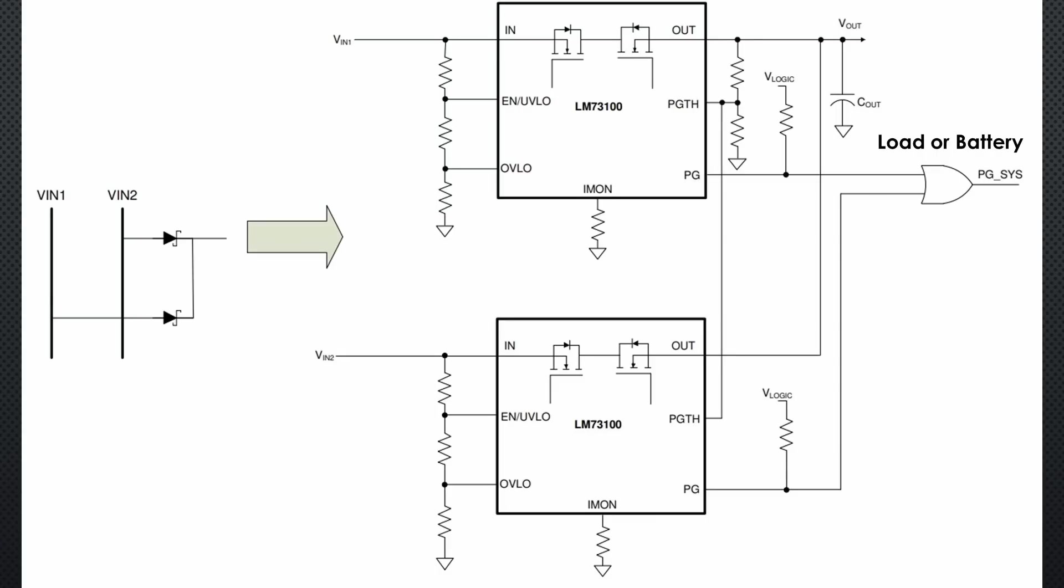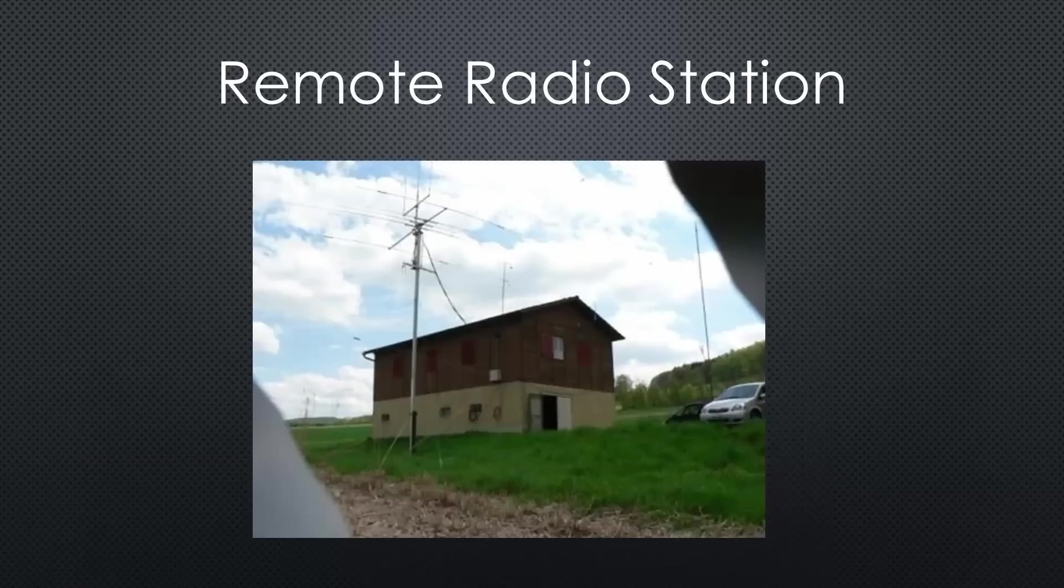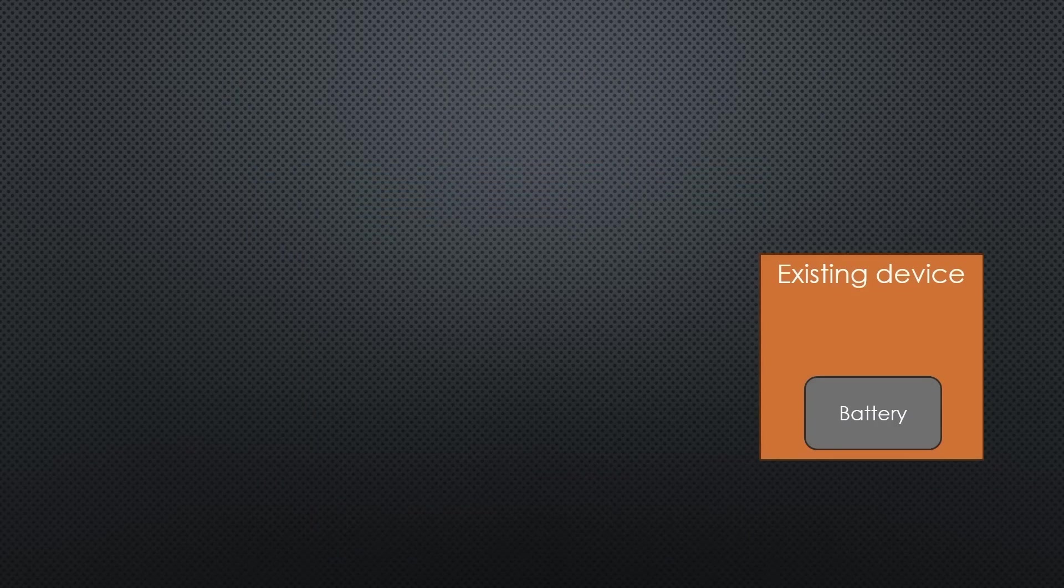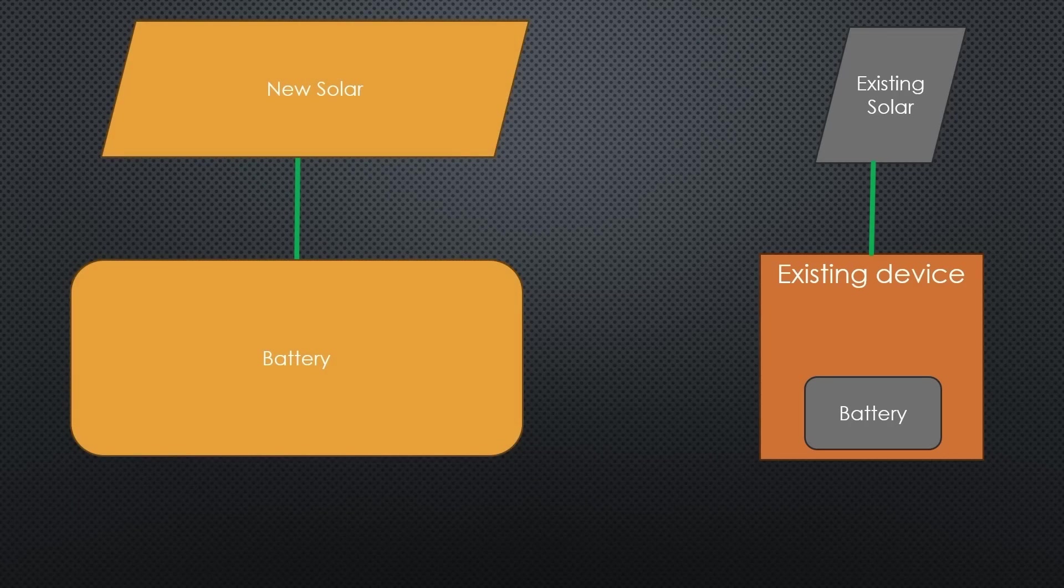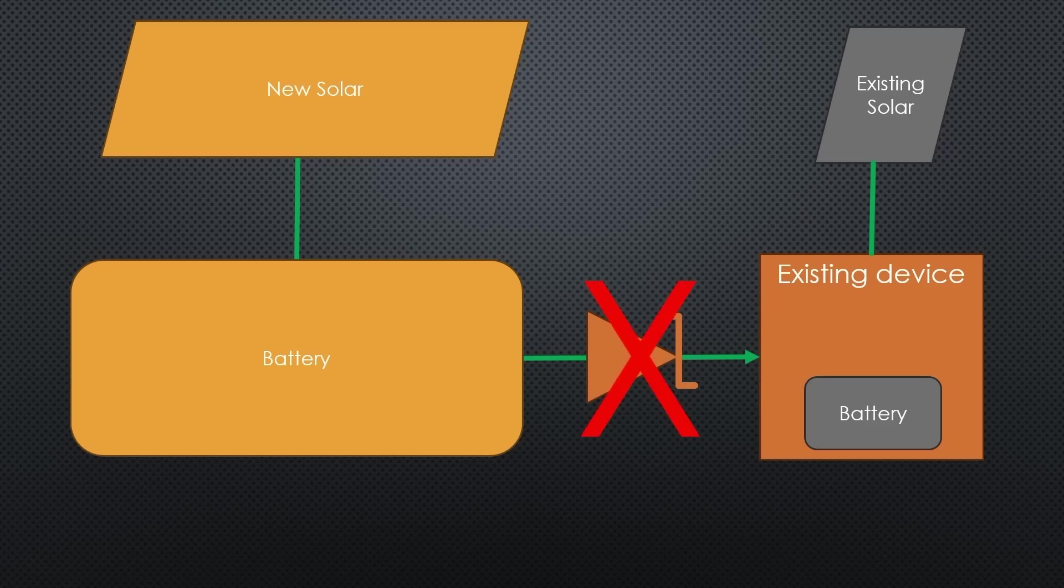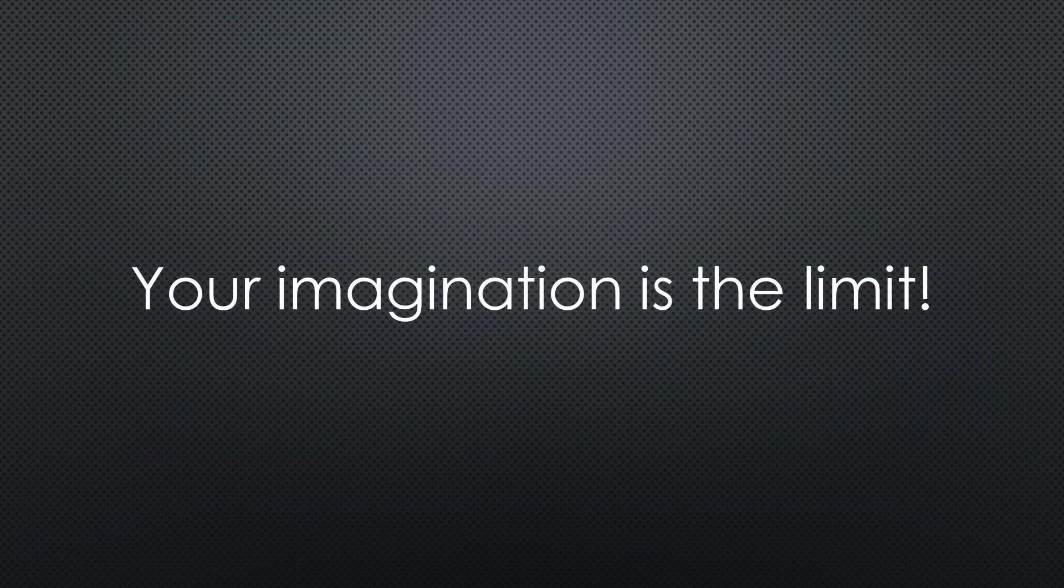Another application is when you have two power sources to power a device or charge a battery. An example: in our remote station, an existing battery-operated device runs off a solar-charged 12V battery. Because I added a bigger solar panel to the barrack, I wanted the bigger battery to charge the small one in case its solar is insufficient. But I did not want to do the reverse. I tried a Schottky diode and it did not work because of its voltage loss. You can imagine many more such scenarios.